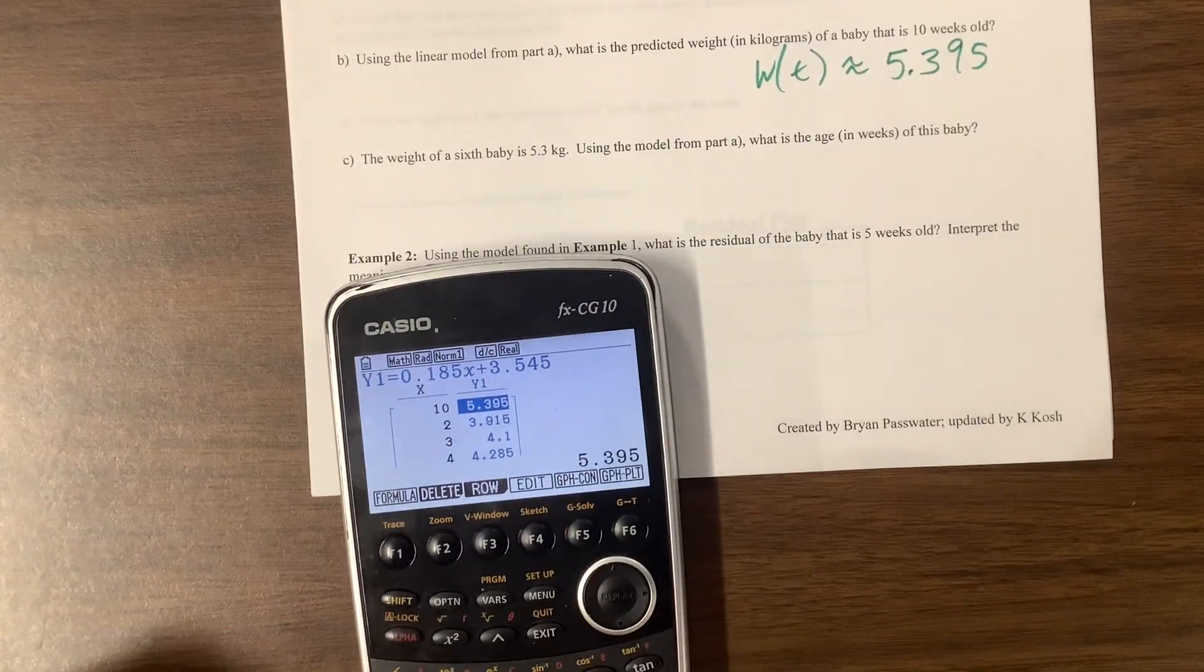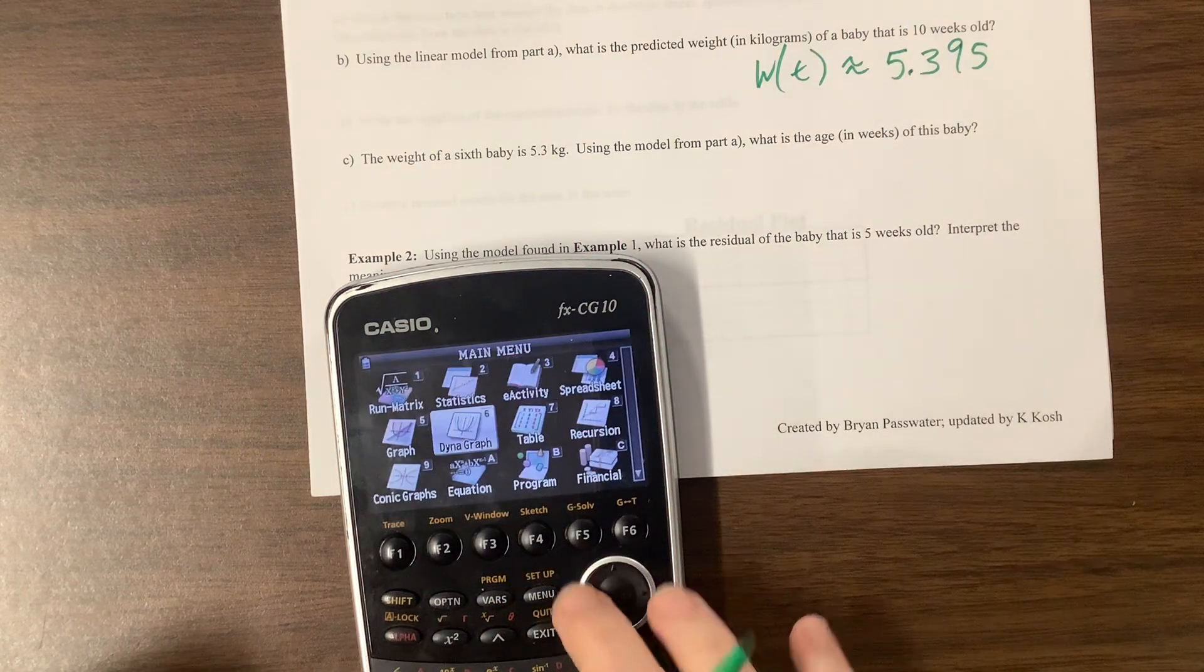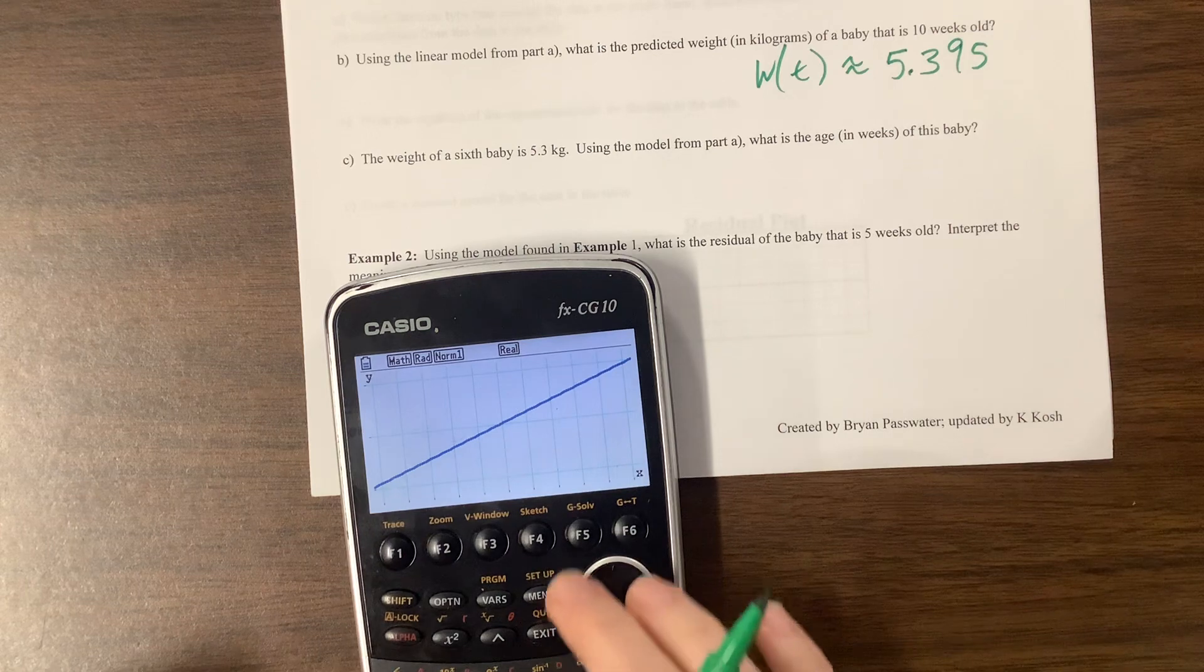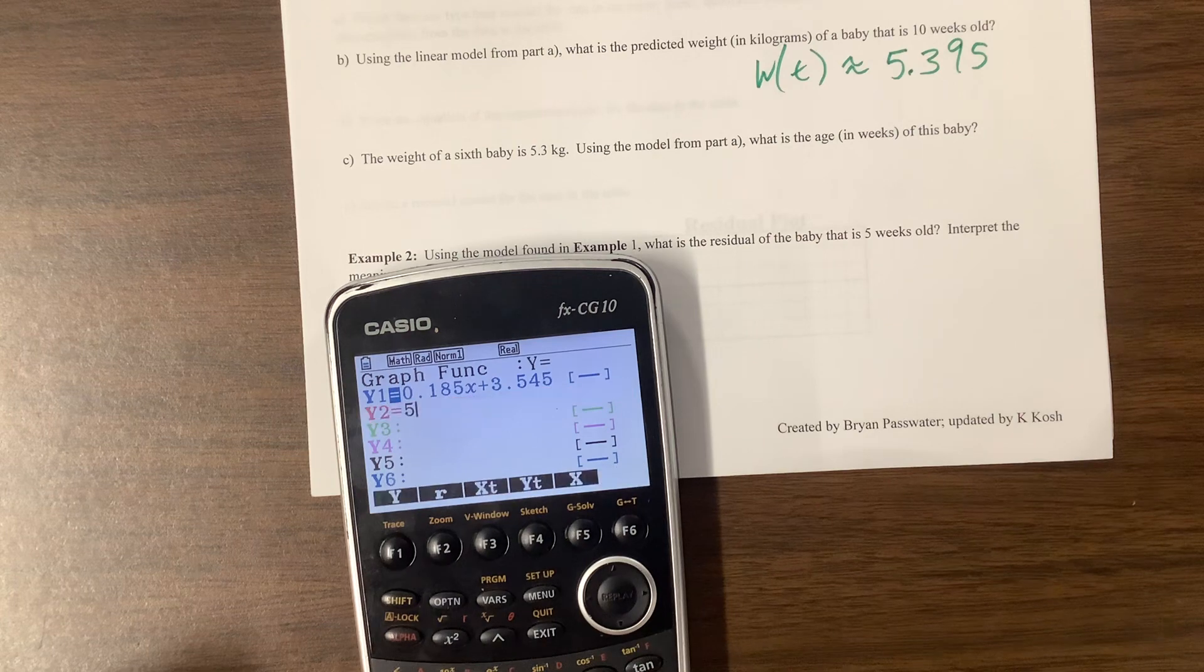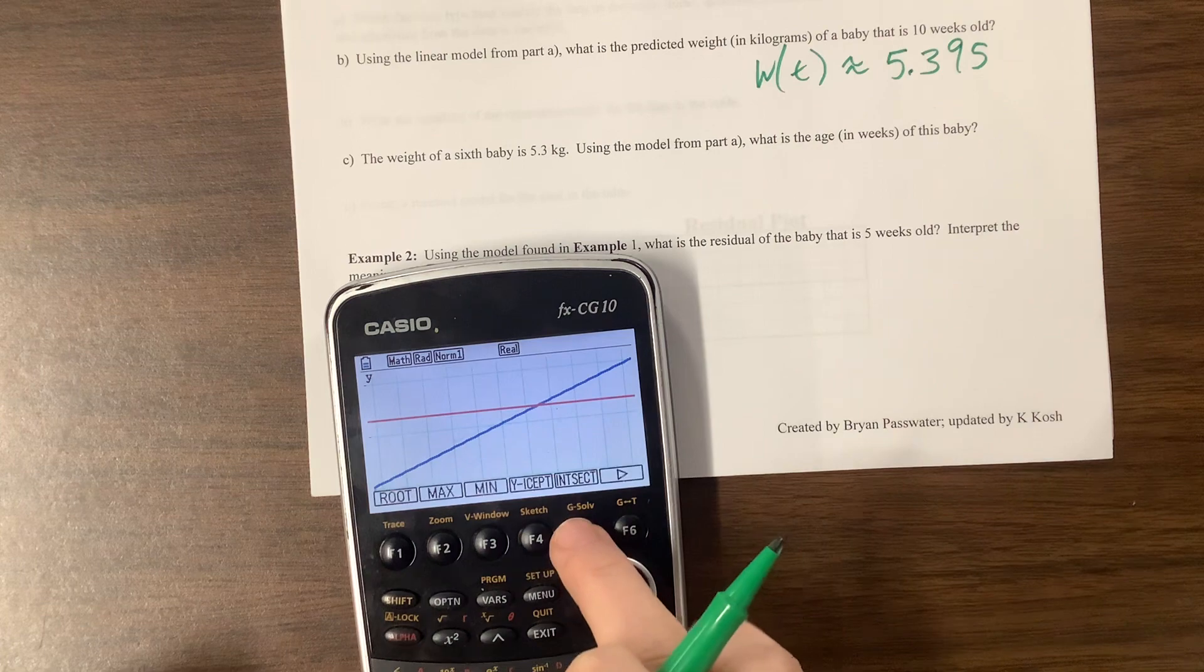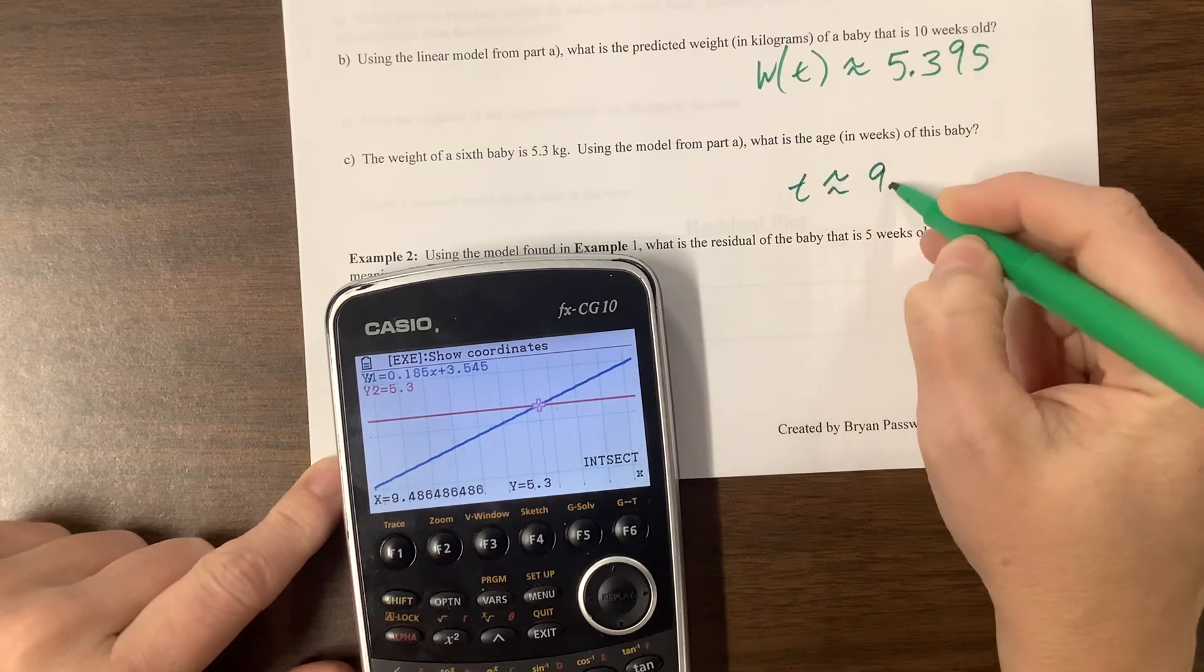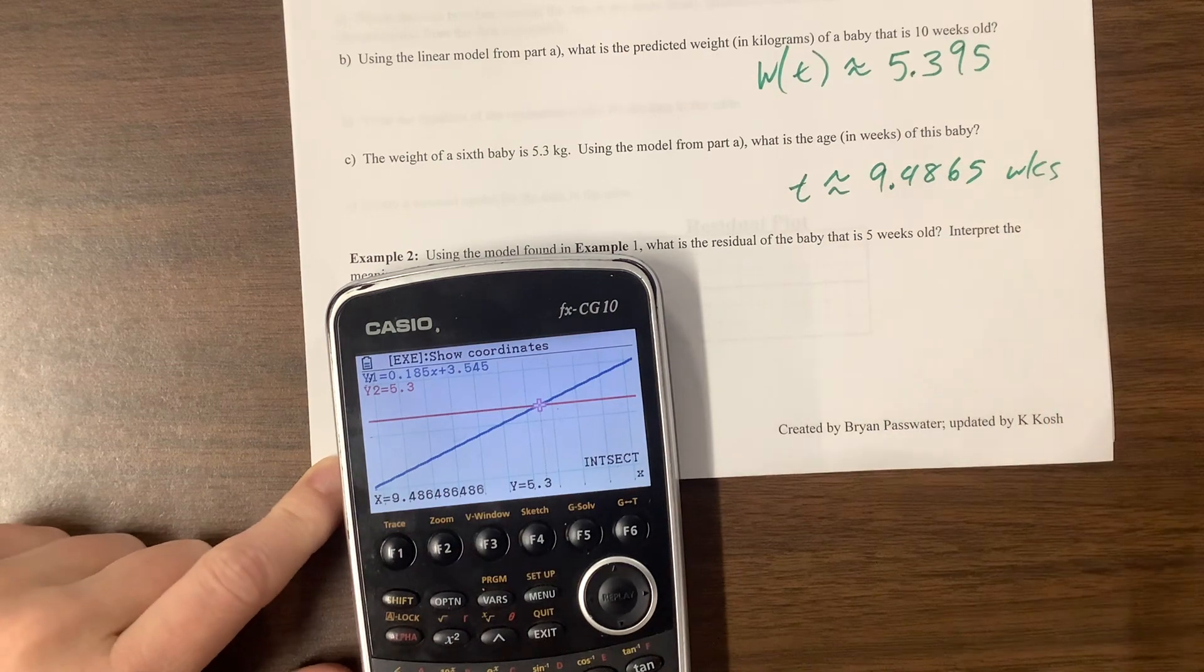And then they say the weight of the baby is 5.3 kilograms. What I would do for this one is maybe I could have, now I'm showing you both methods. I'm going to go into the graph, turn this on, go to draw this. And then let's see, the weight is, so we can actually, we can exit out. We know that the weight is 5.3. And we can g-solve, find the intersection. And so what is the age in weeks? It's about 9.4865 weeks, well, nine and a half weeks.